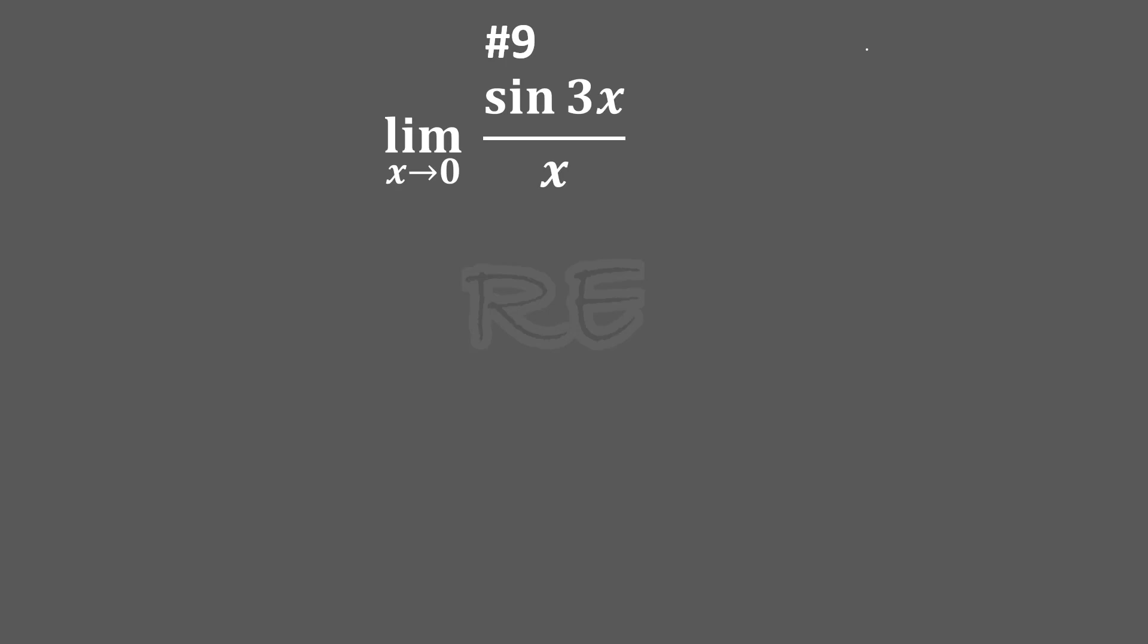Limit as x gets close to zero of sine 3x divided by x. Direct substitution: f of zero equals sine 3 times 0 over 0. Direct substitution will not give us the value of that limit since 0 over 0 doesn't have any sense.